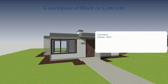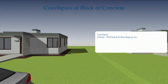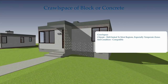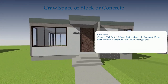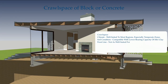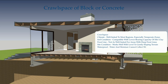Crawl space: Climate — well suited to most regions, especially temperate zones. Soil condition — compatible with lower bearing capacity of silt or clay. Frost line — not as well suited for areas with deep frost lines. Site condition — works well with level to gently sloping terrains. Waterproofing — water and moisture cannot collect within the crawl space. Cost — moderate expense; allows underfloor access.